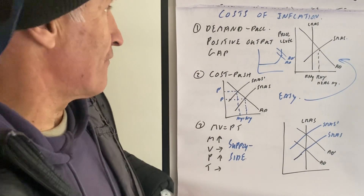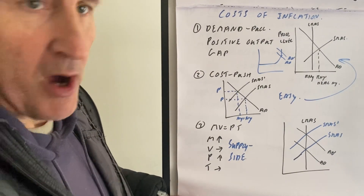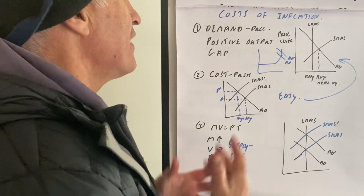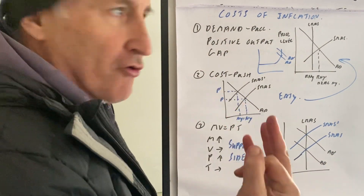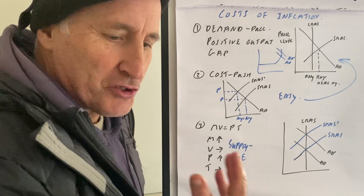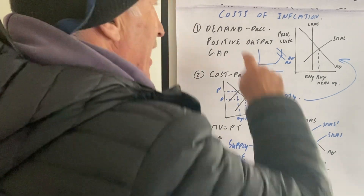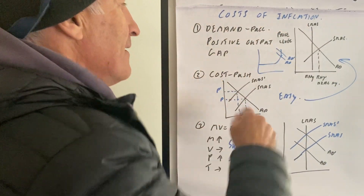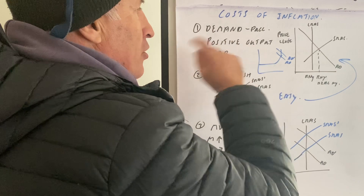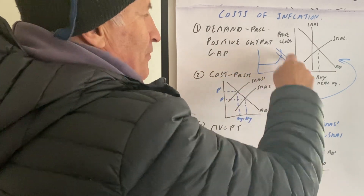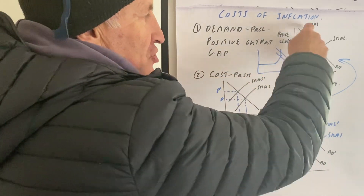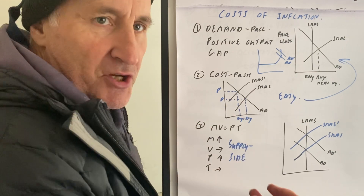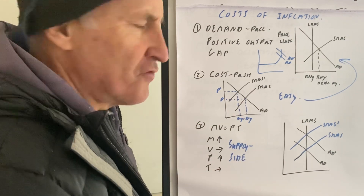Okay, I think we're up to about video 12 now, and this one is the causes of inflation. There are three causes of inflation. The first is demand-pull — a positive output gap — demand-pull inflation. Control this diagram or the positive output diagram: too much demand chasing too few goods.